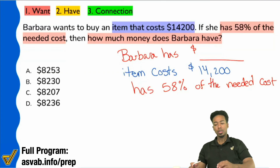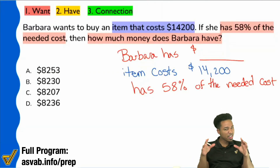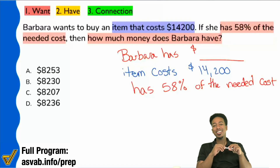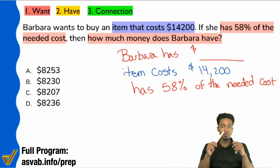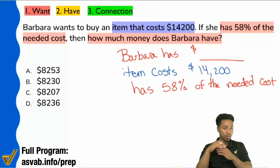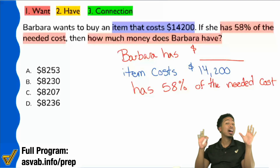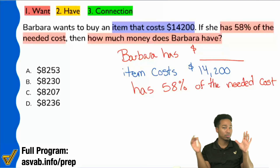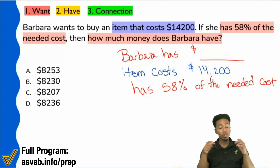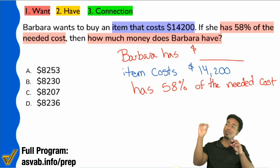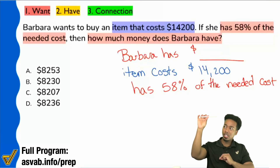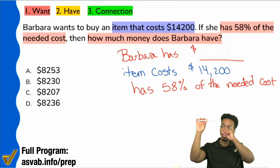Let's write all that down to make it very clear. We're looking for how much money Barbara has. We're told the cost of the item — $14,200 — that's the amount of money she needs. I don't know what she's trying to buy, but Barbara is trying to buy an item, and that's the amount of money she needs. She has 58% of that — so how much is that?